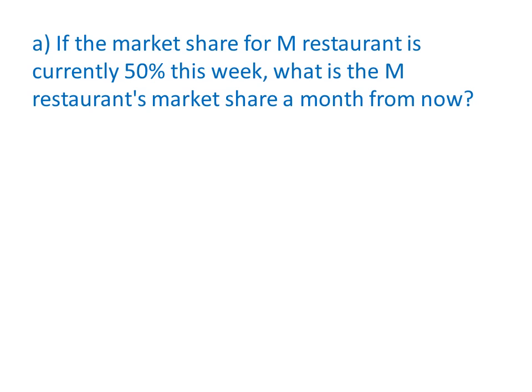For part A, we want to see — if the market share between restaurant M and B is 50-50 — what would be the market share of restaurant M a month from now? Market share means if we pick a random person right now, there is a 50% chance that person is eating at restaurant M and a 50% chance at restaurant B. That's vector Q. In this problem, people change restaurants every week, so a month from now is after four weeks, which is after four transitions.